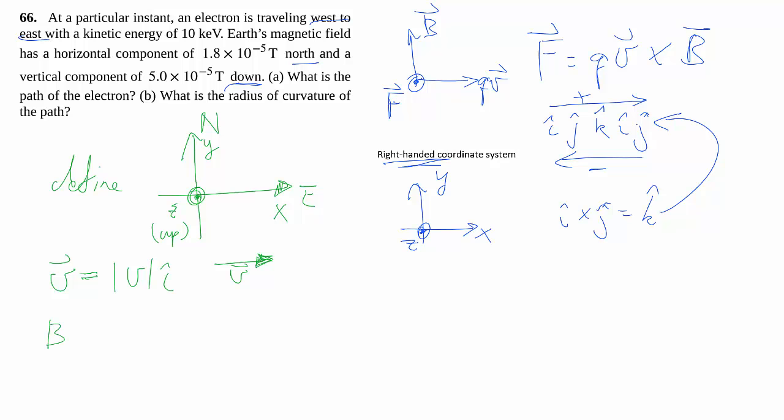Then we have B. They say there's a component to the north. North is positive Y, so J. And then a downwards component, so that's negative Z or negative K. Everything's in Tesla. So now we have all the vectors defined, let's actually do the question.